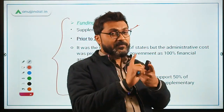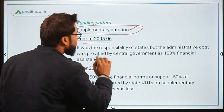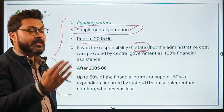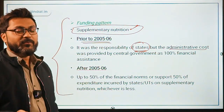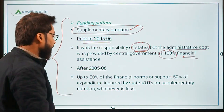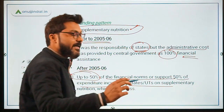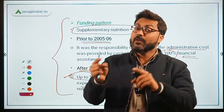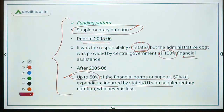The funding pattern is divided into two parts: one is for supplementary nutrition and the other is for the other components. For supplementary nutrition, prior to 2005-06, the funding was the responsibility of states — the expenditure incurred in providing supplementary nutrition to children was the state's responsibility — while the administrative cost was borne by the central government as 100% financial assistance. After 2005-06, up to 50% of the expenditure incurred by states or UTs on supplementary nutrition, or 50%, whichever is less, would be provided by the central government.